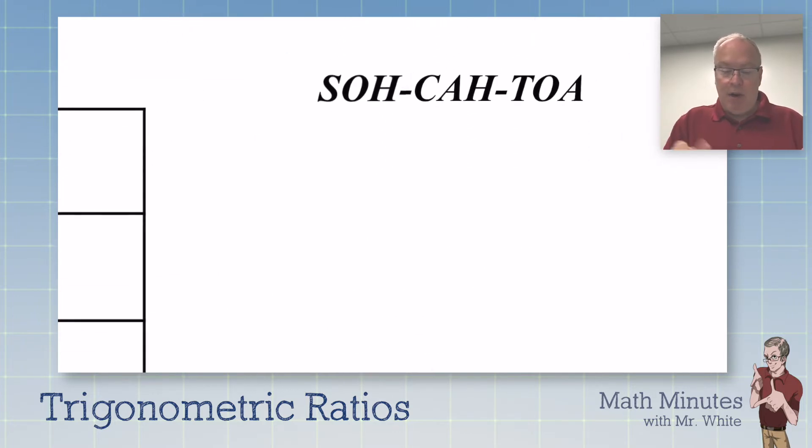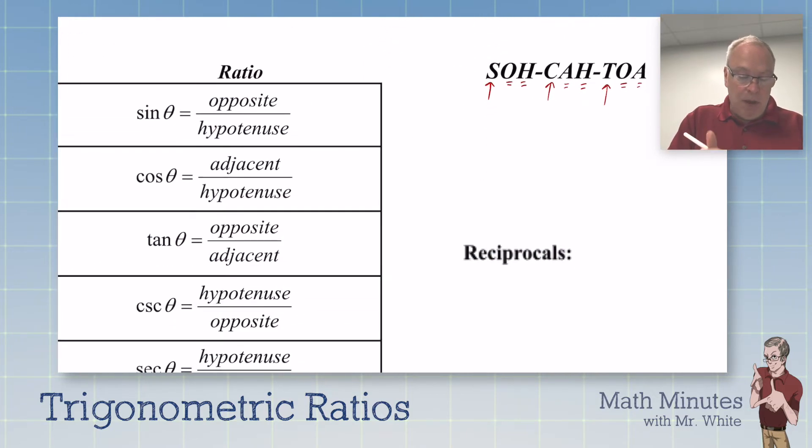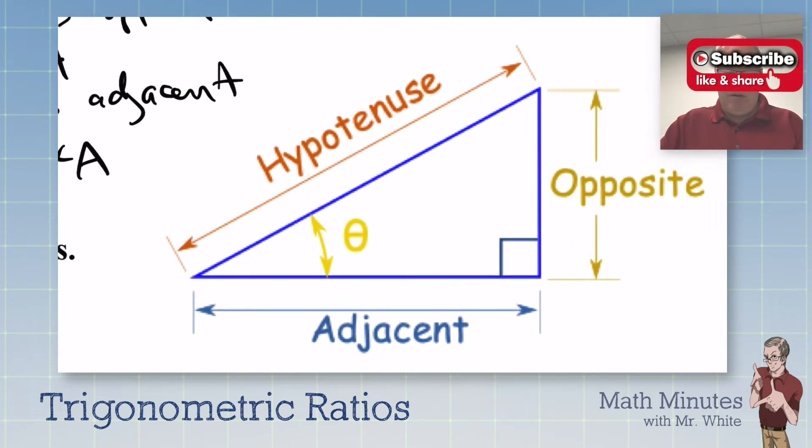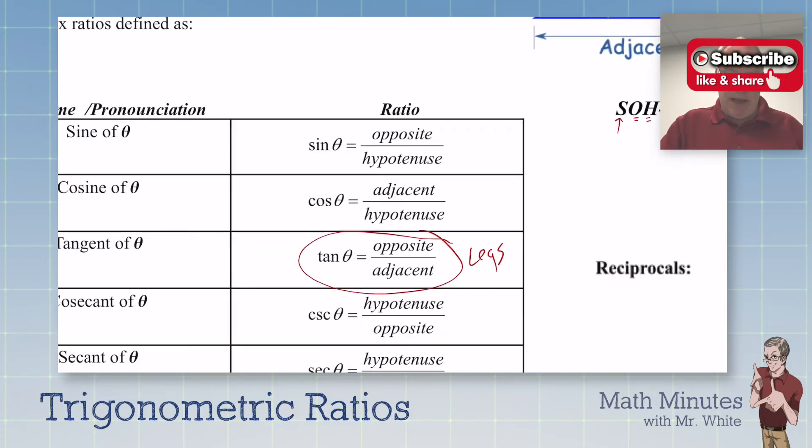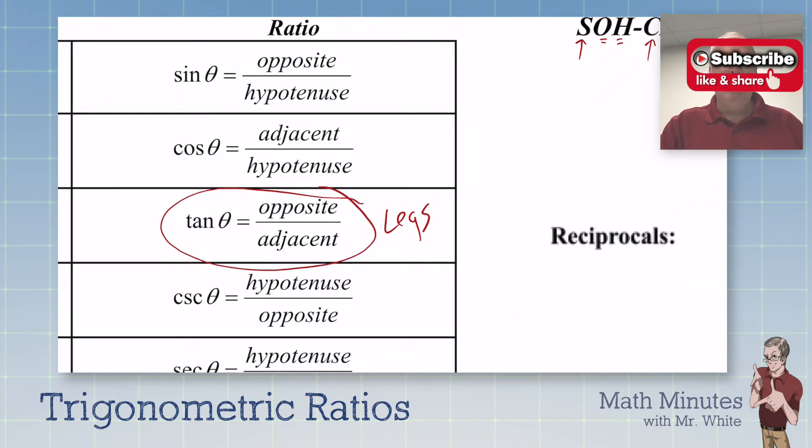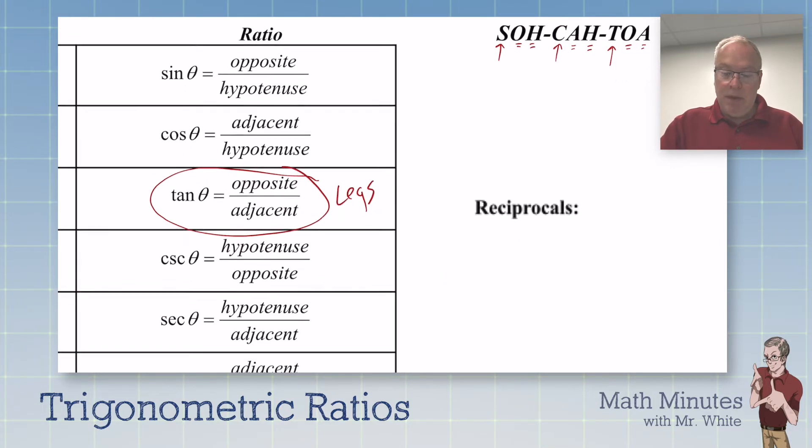So a couple things I wanted to mention. SOHCAHTOA is something that a lot of students like to use to remember that sine is opposite over hypotenuse, and that cosine is adjacent over hypotenuse, and that tangent is opposite over adjacent. Tangent is opposite over adjacent. That's only legs of the triangle. Legs of the triangle are the two sides that are not the hypotenuse. Tangent uses the legs. And we like our tan legs. No one likes to have crazy white legs like me. So we like our tan legs. It's a simple way to remember that tangent uses the two legs when you're creating the fractions.